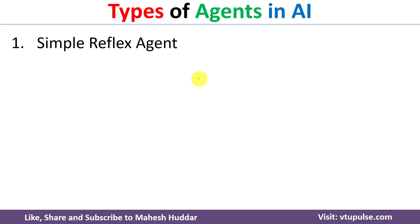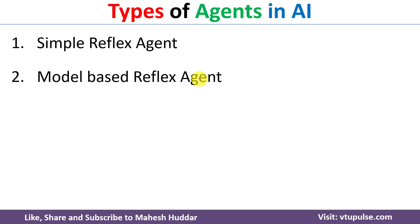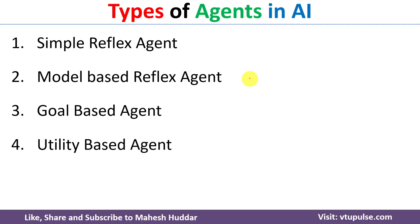The first one is a simple reflex agent, second one is model-based reflex agent, third one is goal-based, and fourth one is utility-based agent in artificial intelligence.